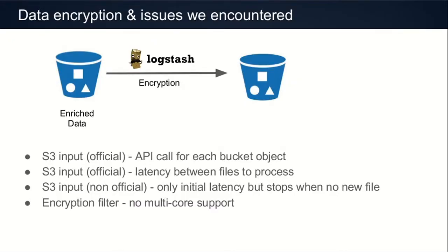The first task I had was to take all those events saved in S3 and, using Logstash, move them to another bucket where the data is encrypted. We had to do that because of compliance regulations. We used Logstash, and had a couple of issues with it. First, we had to use the S3 input, and the official plugin has a big flaw: it starts by scanning the whole bucket, and since in S3 there's no way to know the timestamp of each object in advance, it calls the S3 API for each object to get additional details, which is very resource-consuming.